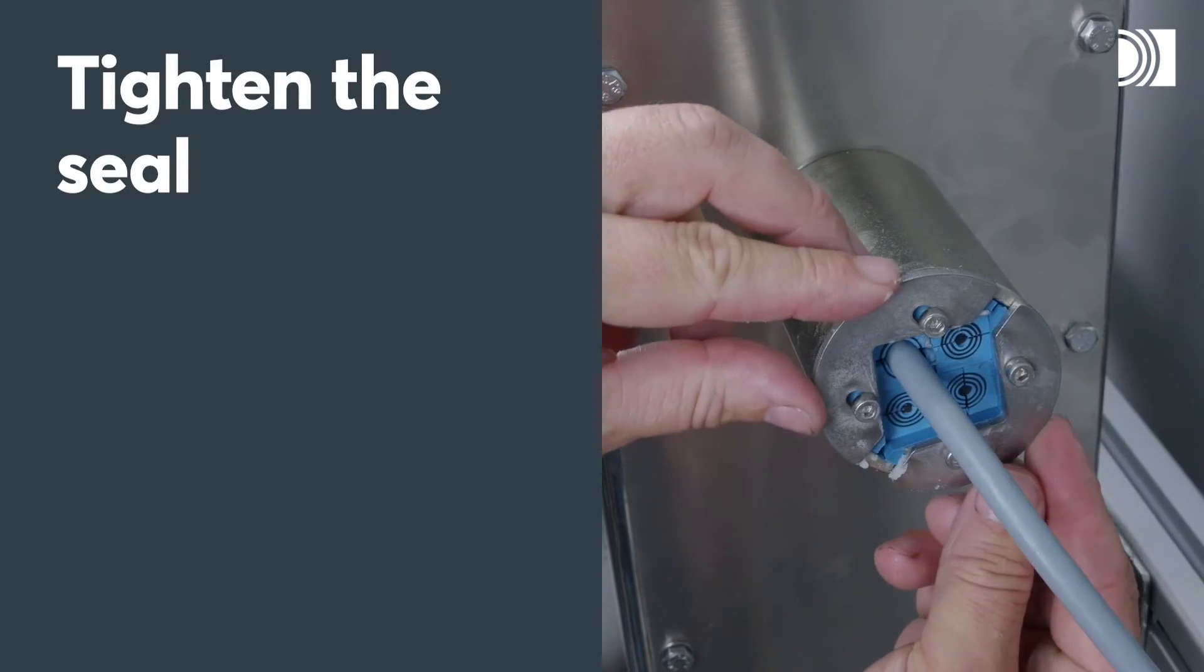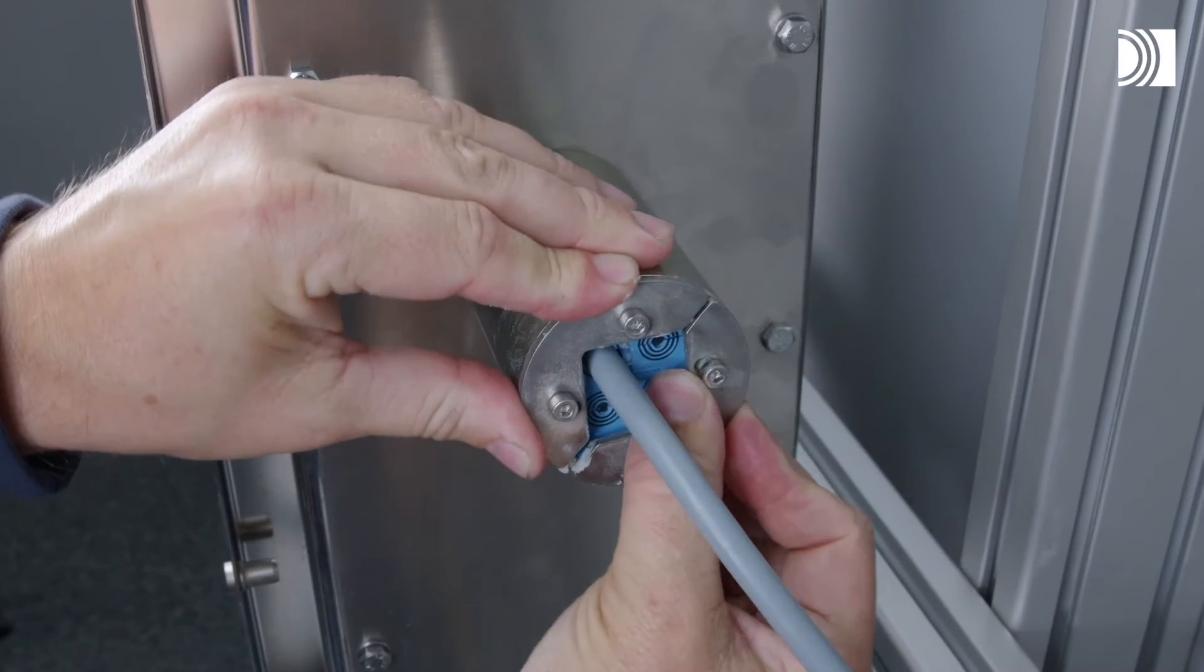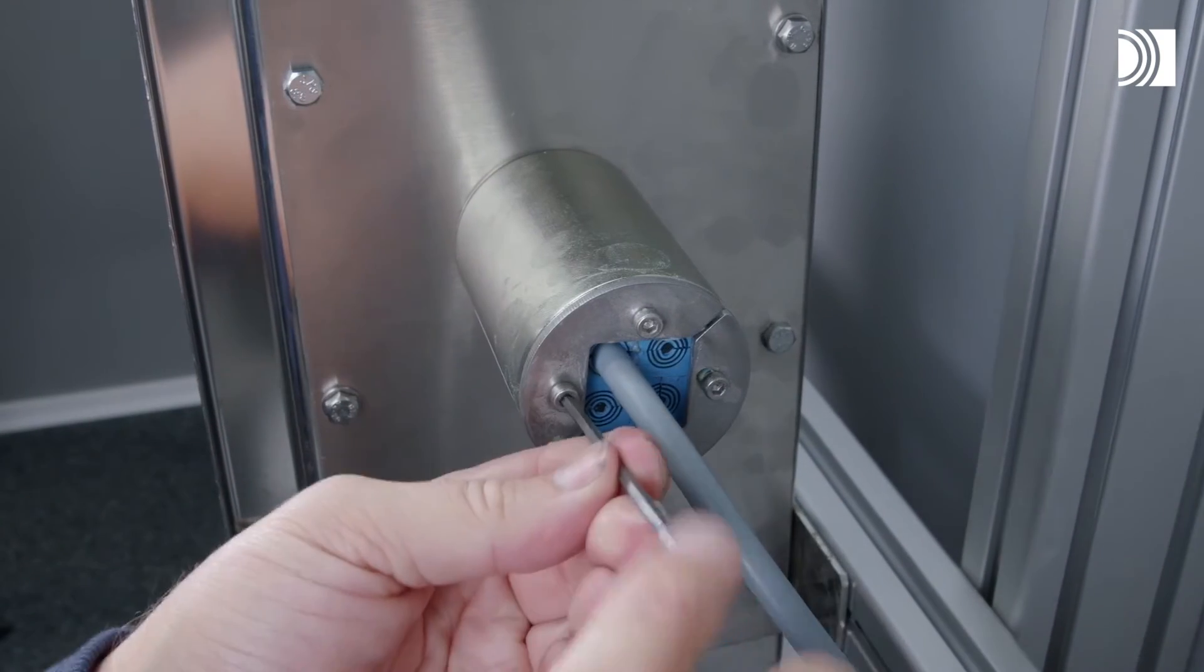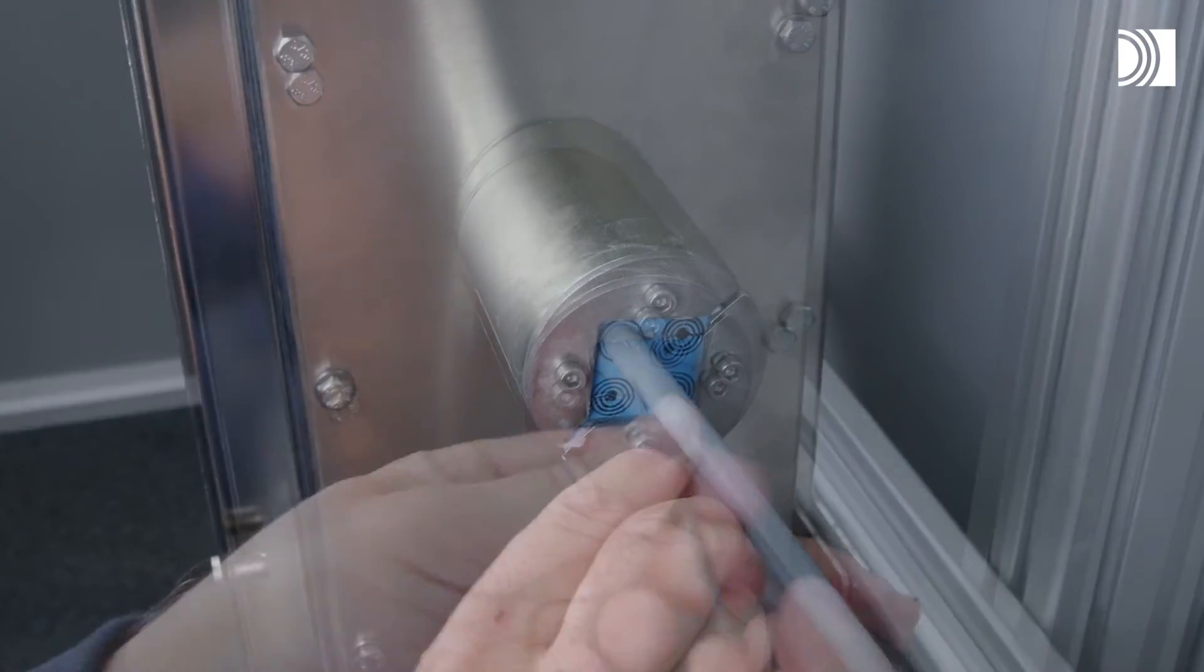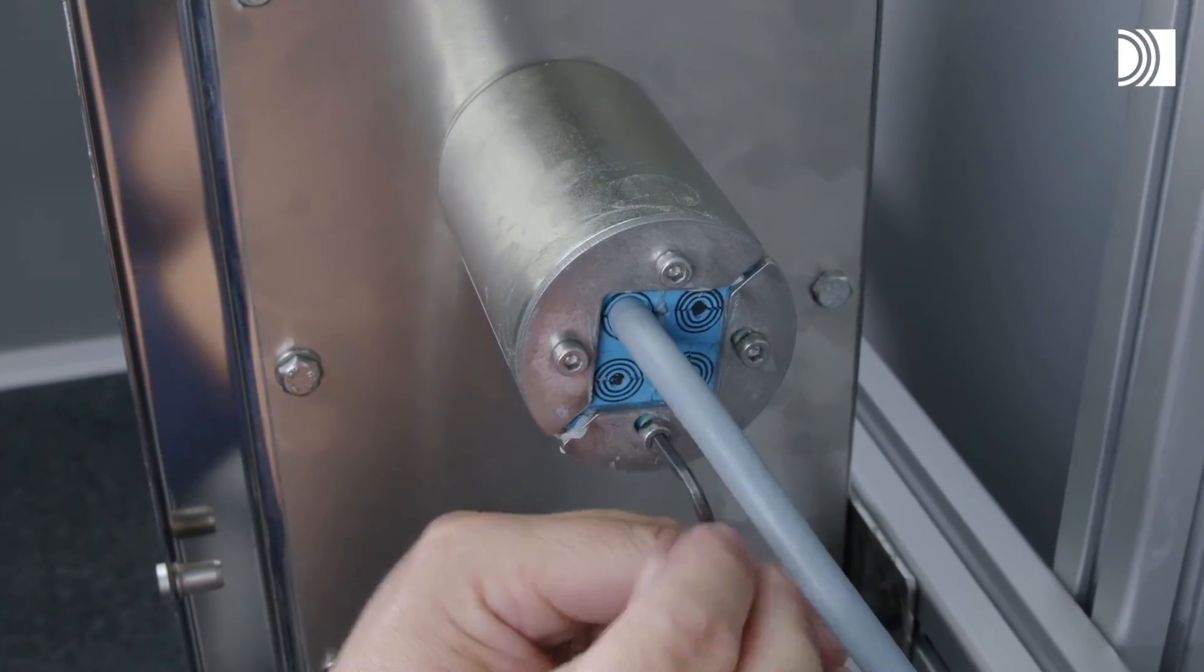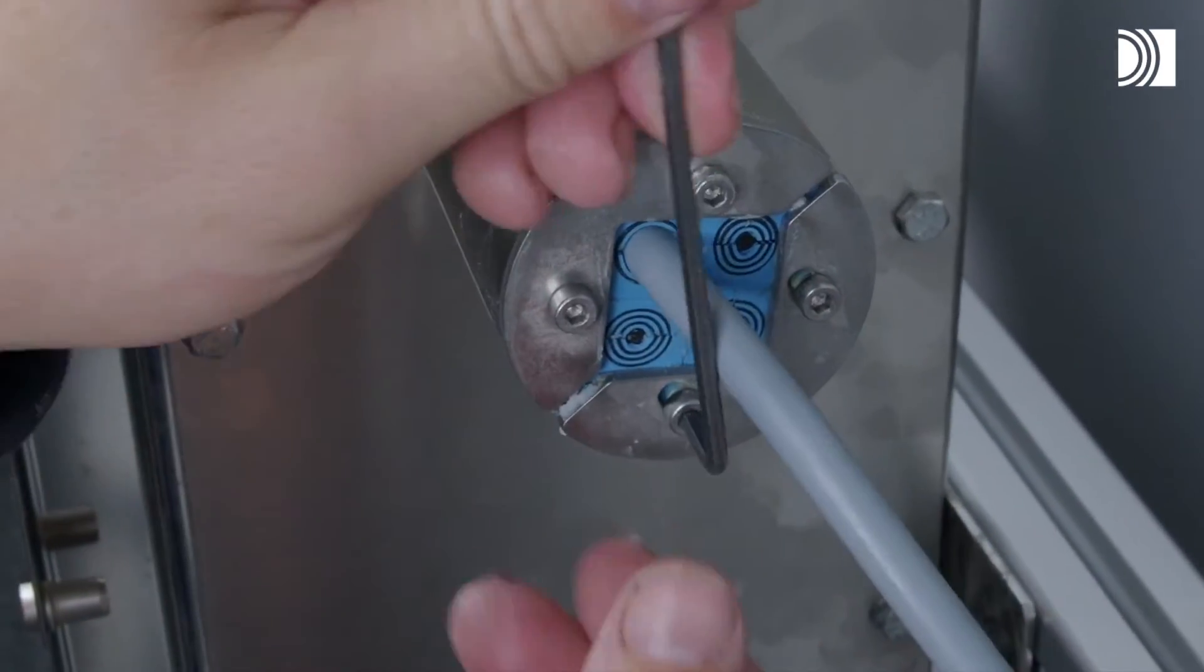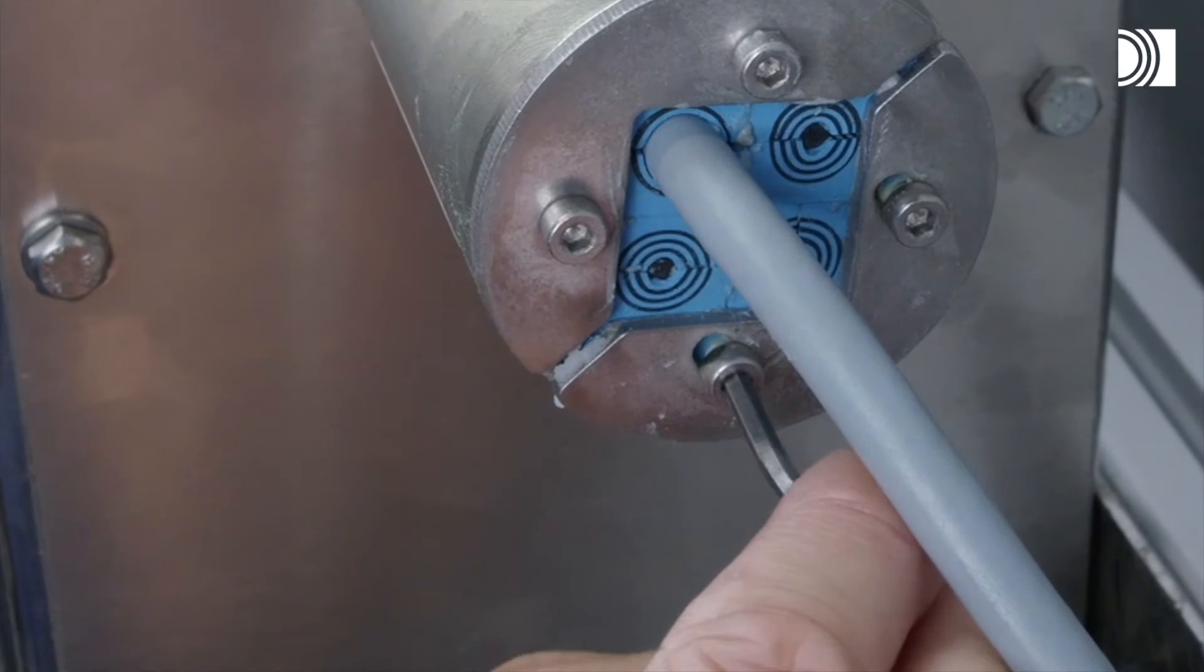Tighten the seal. Push the front fittings back towards the centre. Tighten the nuts crosswise in small steps. Rubber surfaces bulging and protruding excess lubricant indicate a finalized transit.